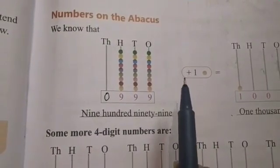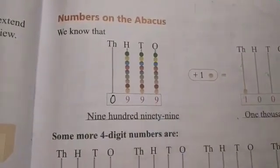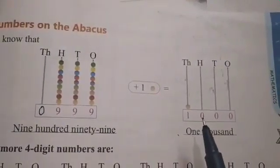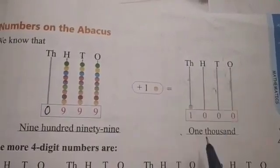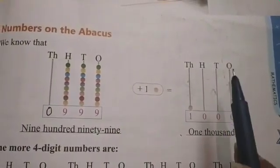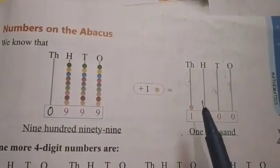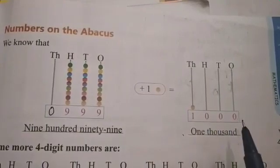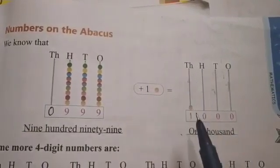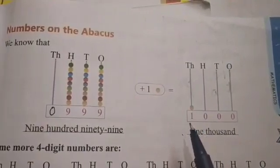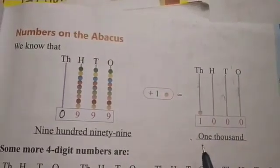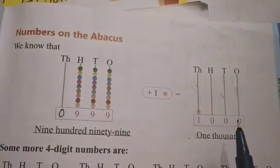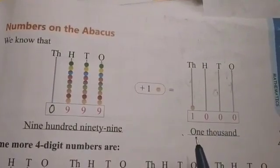If we add 1 to 999, we get the number 1000. So here in this Abacus, 1000 is written because at the 1's, 10's, and 100's places there are no beads, so we will write 0 there. But at the 1000's place there is 1 bead, so we will write 1 there. The number formed is 1,000, and its number name is one thousand.